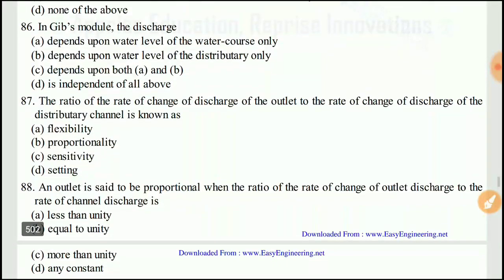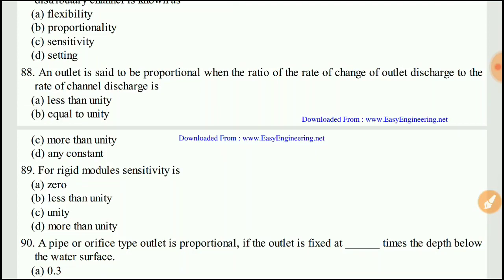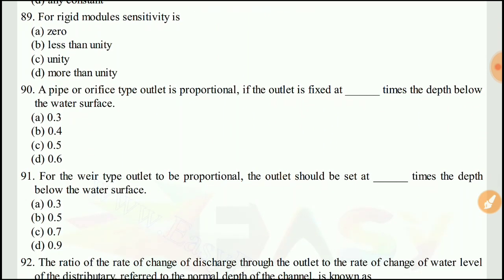Question 87: The ratio of the rate of change of discharge of the outlet to the rate of change of the channel discharge — the right answer would be B, it is equal to unity. For a rigid module, the sensitivity is zero. The right answer would be A.